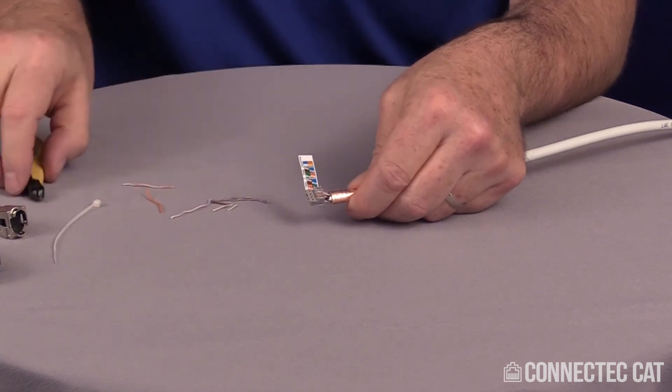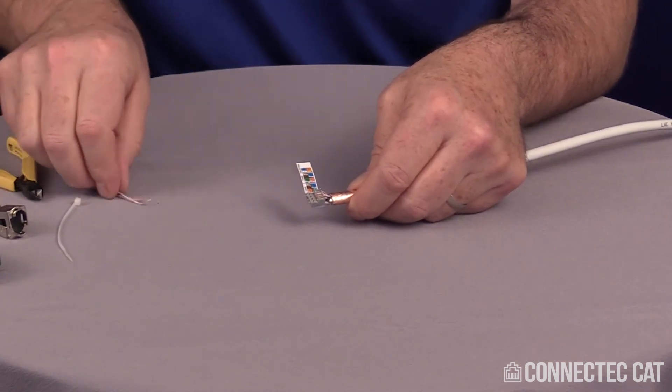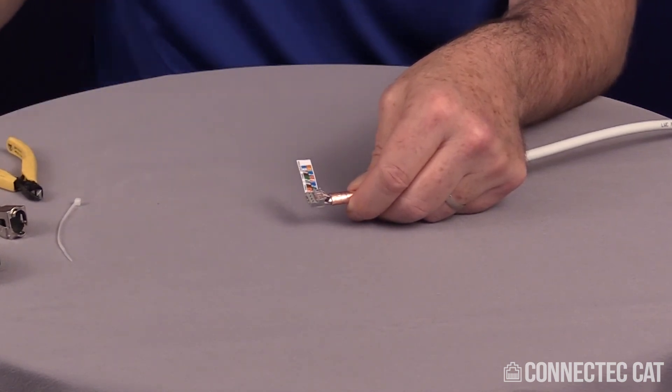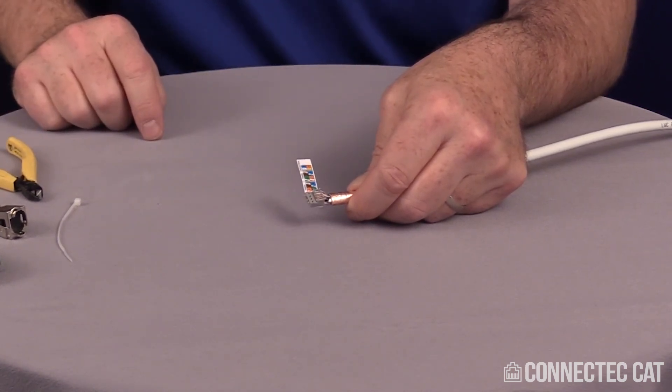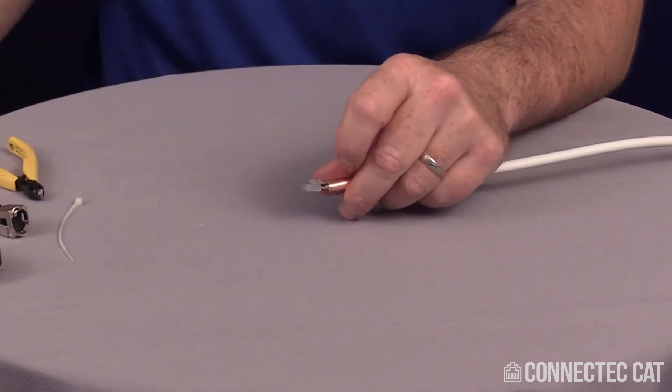Now at this point, I can do a couple things. I can leave the label on. If you're going to be re-terminating this connector, it's a good idea to keep the label on. If you're not going to re-terminate it, you can go ahead and pull the label off. It works with the label or without the label, either way. I'm going to go ahead and peel the label off on this particular demonstration.